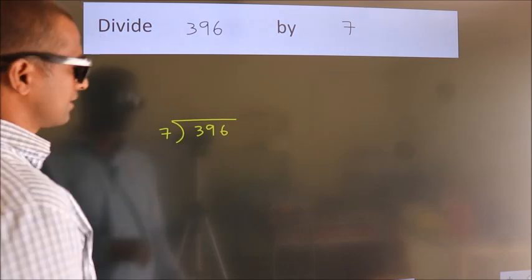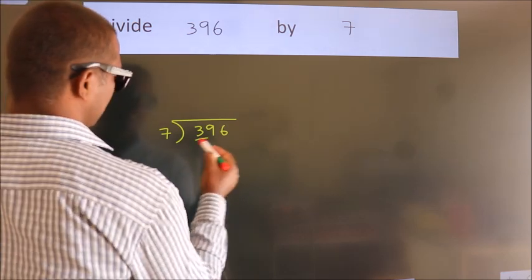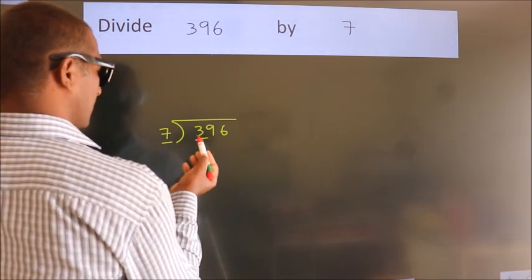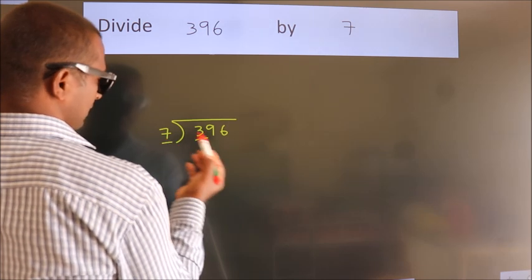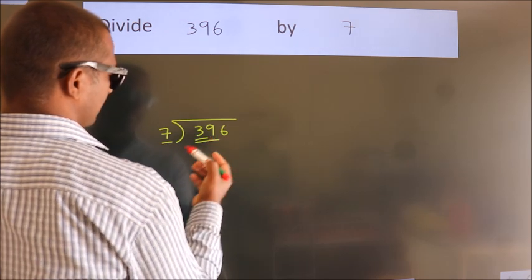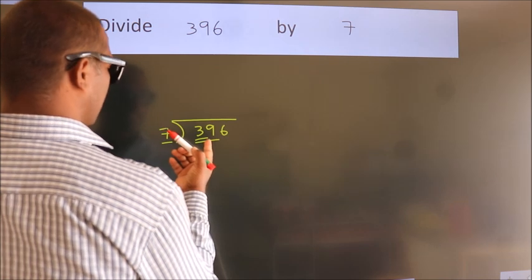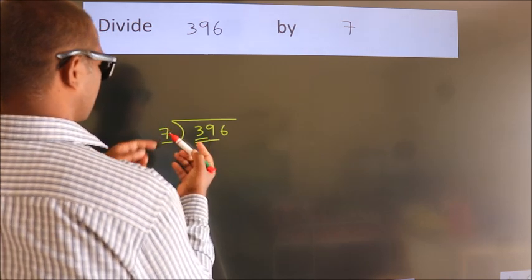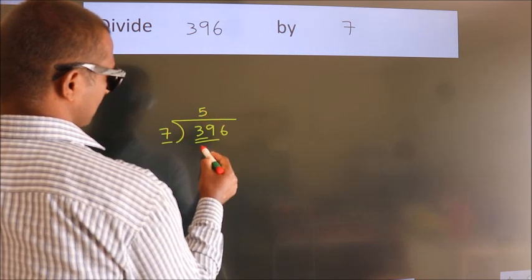Next, here we have 3, here 7. 3 is smaller than 7, so we should take 2 numbers: 39. A number close to 39 in the 7 table is 7 fives, 35.